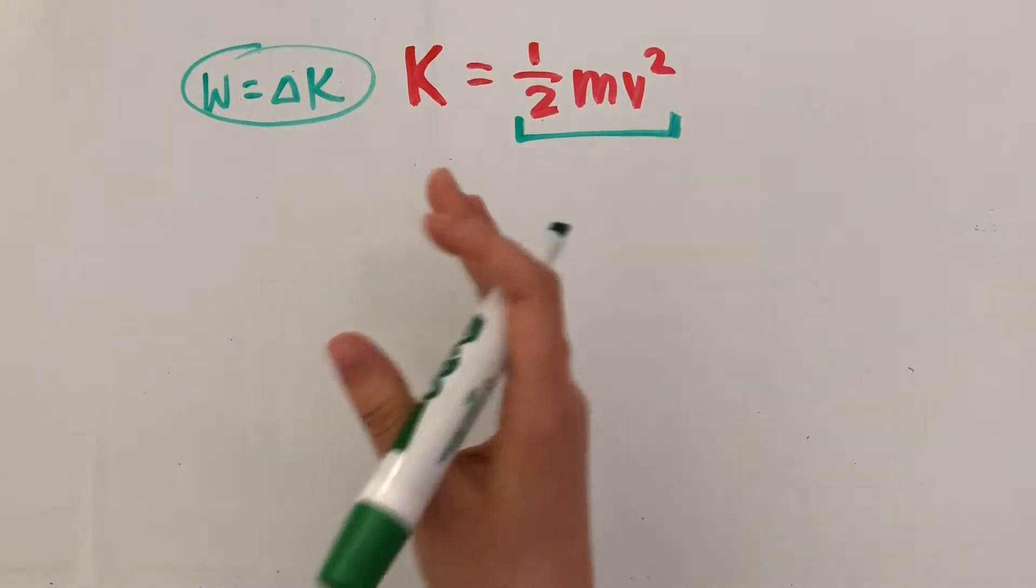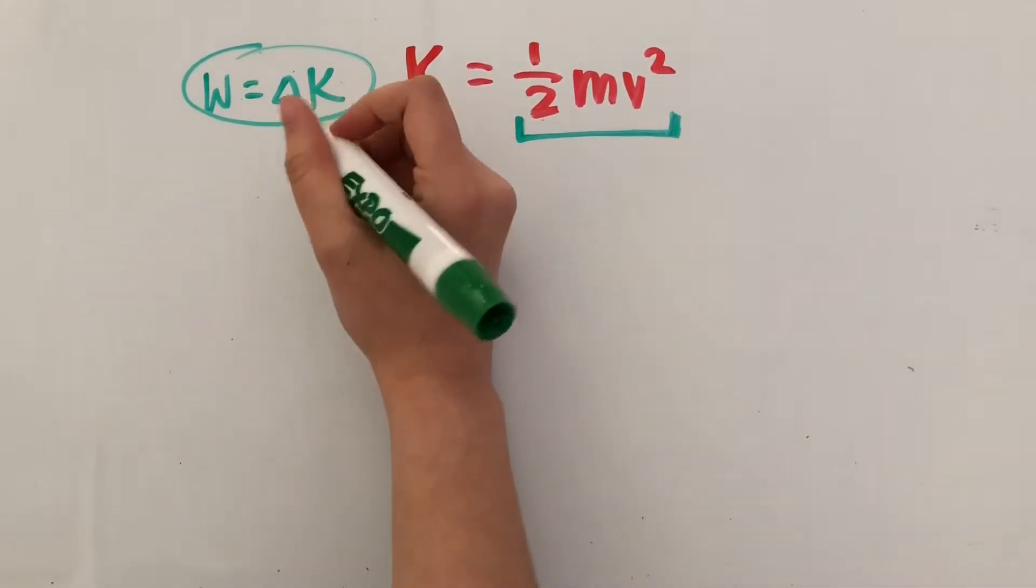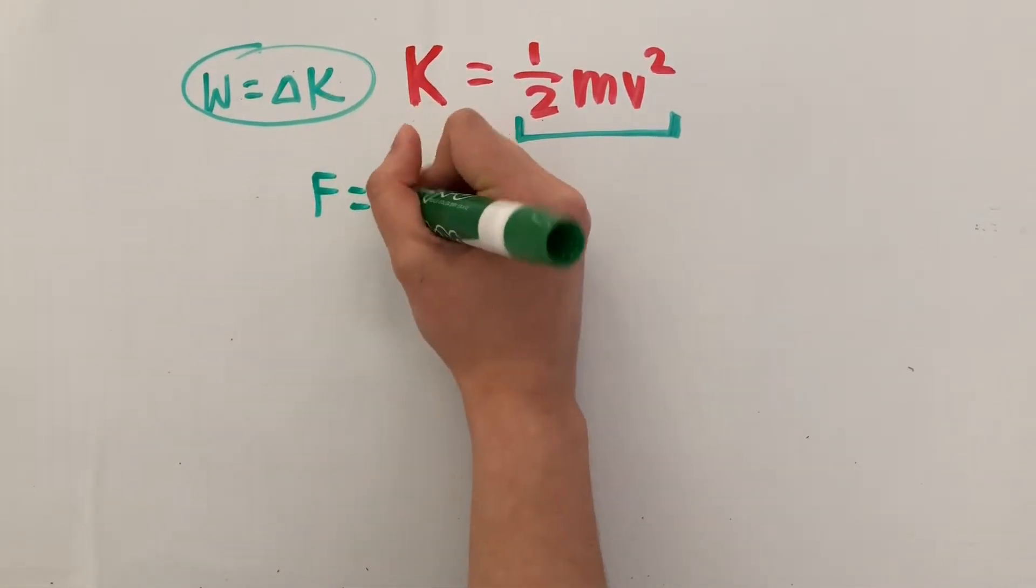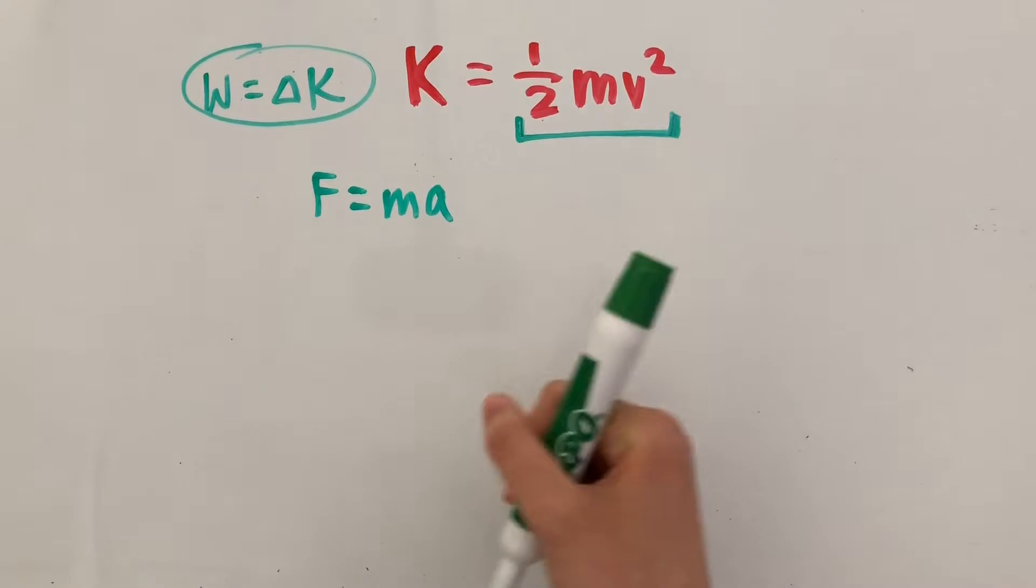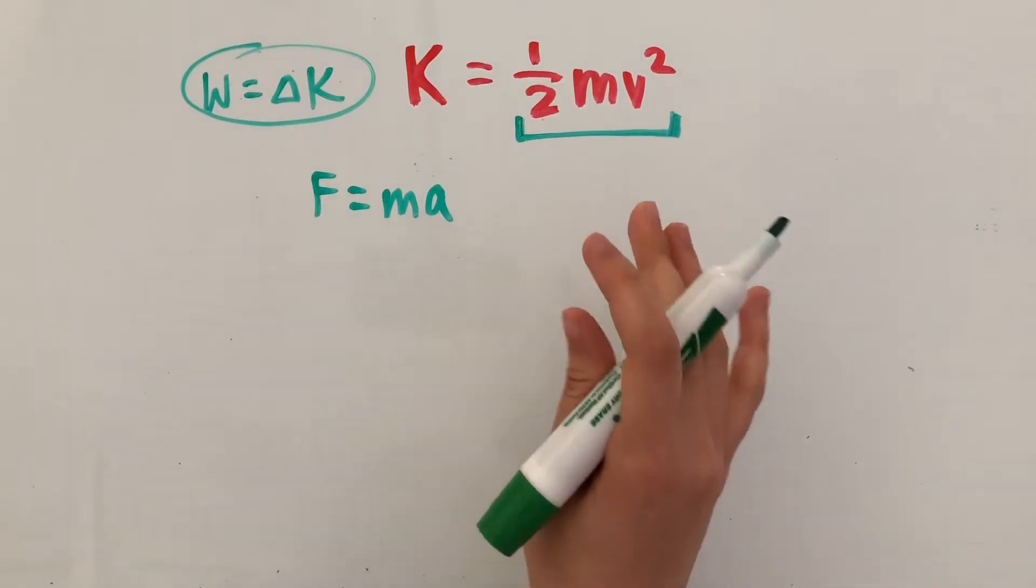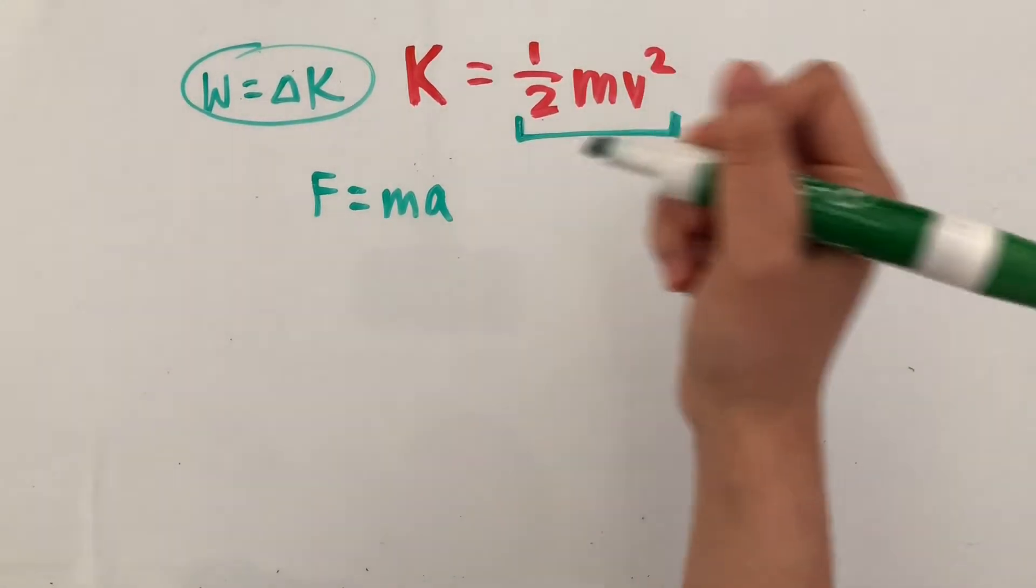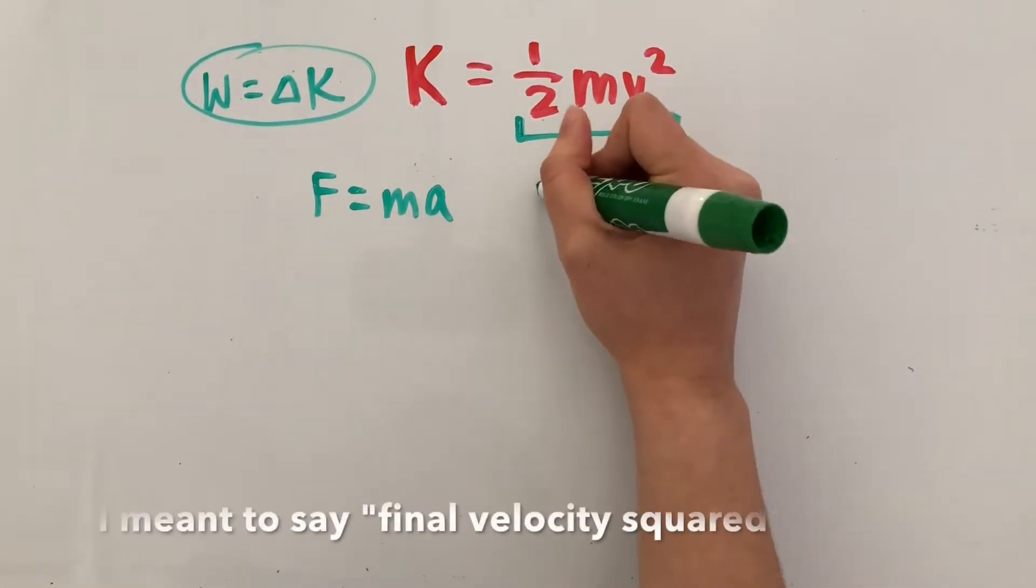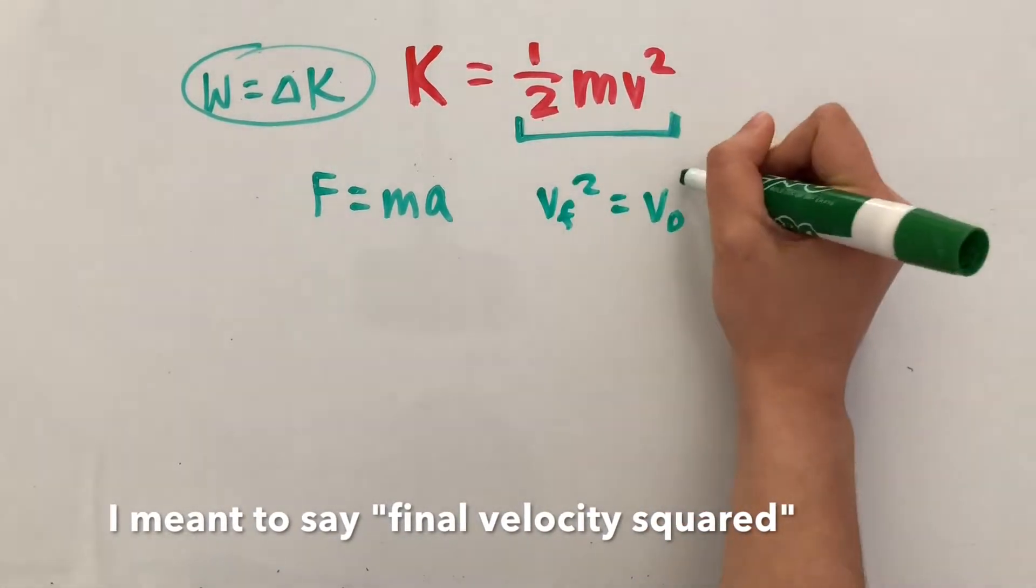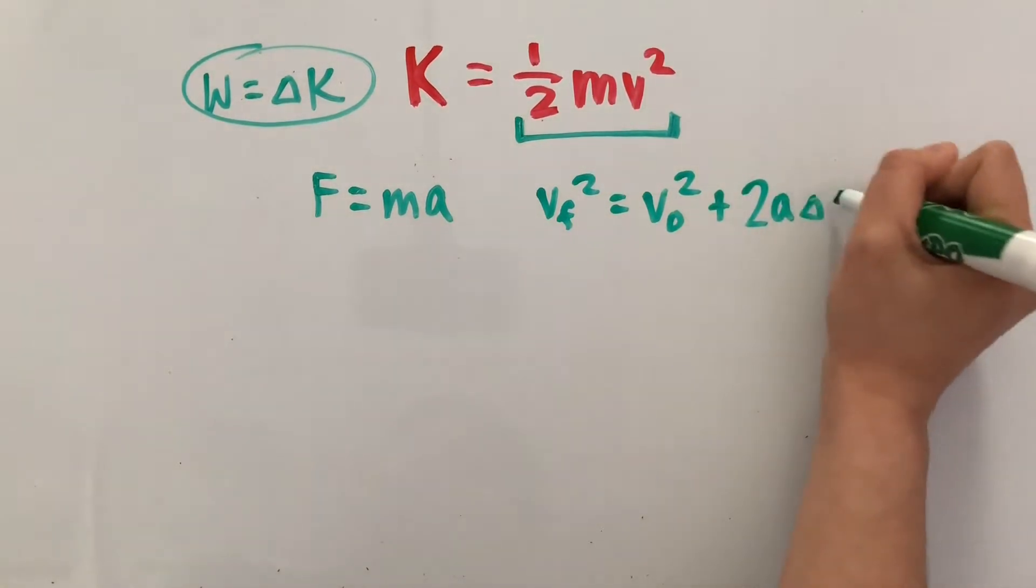So we're going to need some equations with acceleration in them first. And the first one that I can think of is Newton's second law, which states that force is equal to mass times acceleration. Now, we're going to use another equation with acceleration in it. And this second one is going to be one of the kinematics equations, which states that the final velocity of an object is equal to initial velocity squared plus 2 times acceleration times displacement.